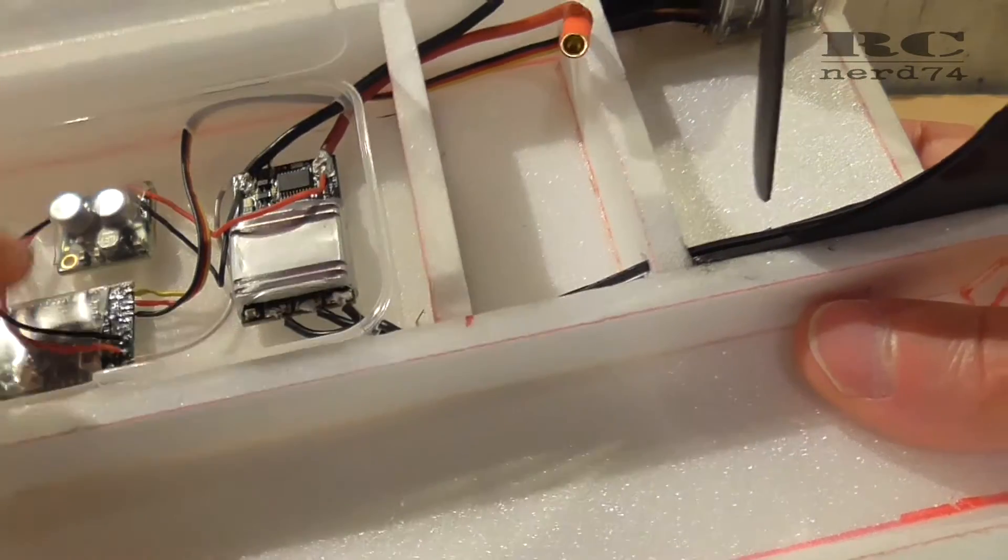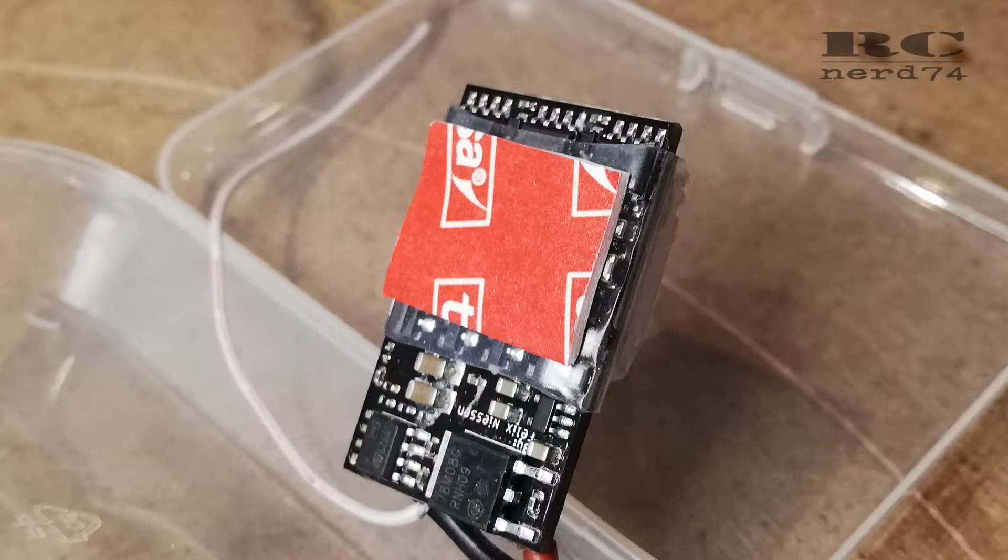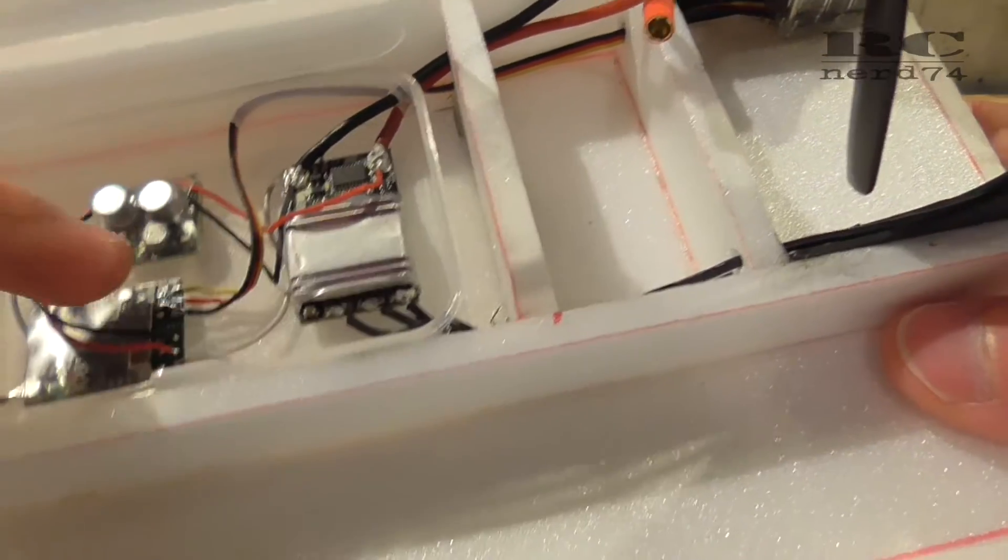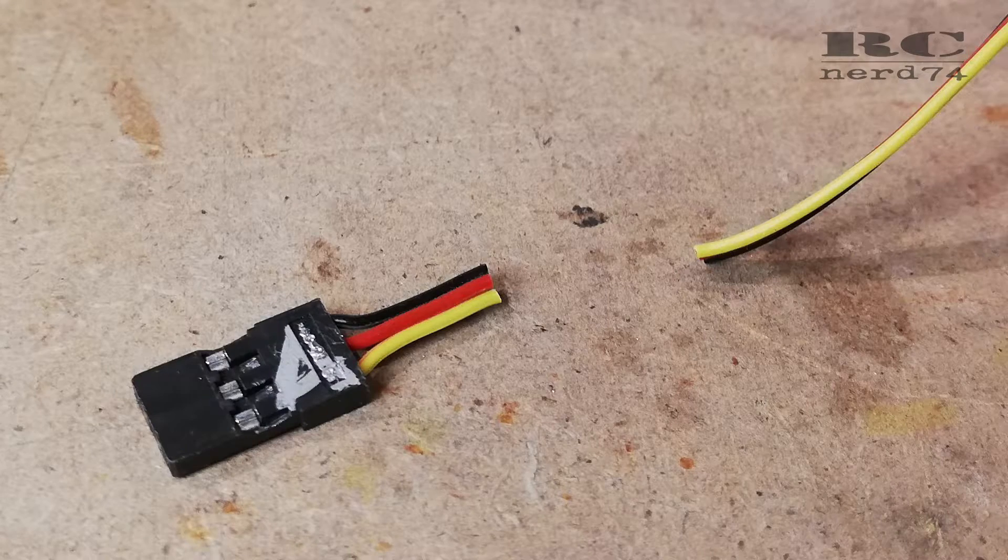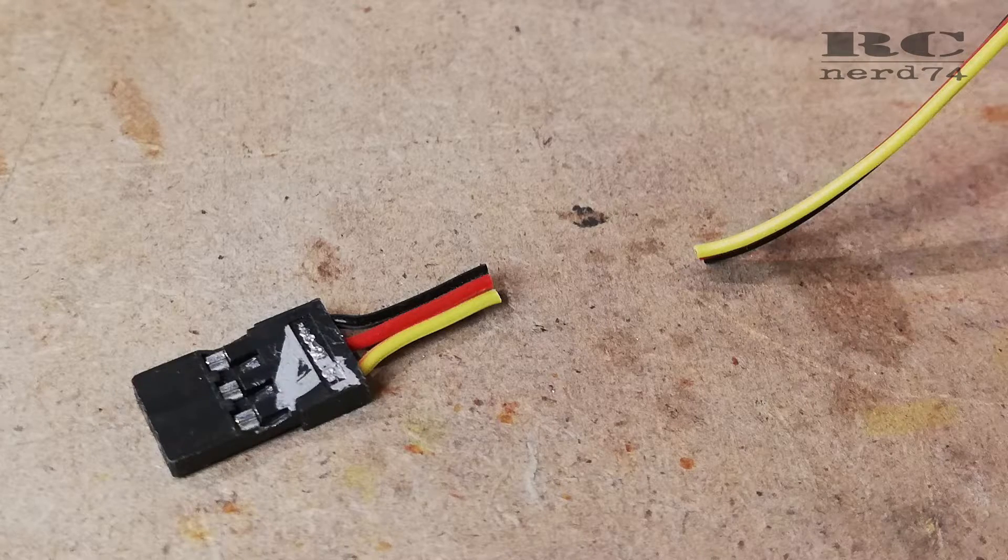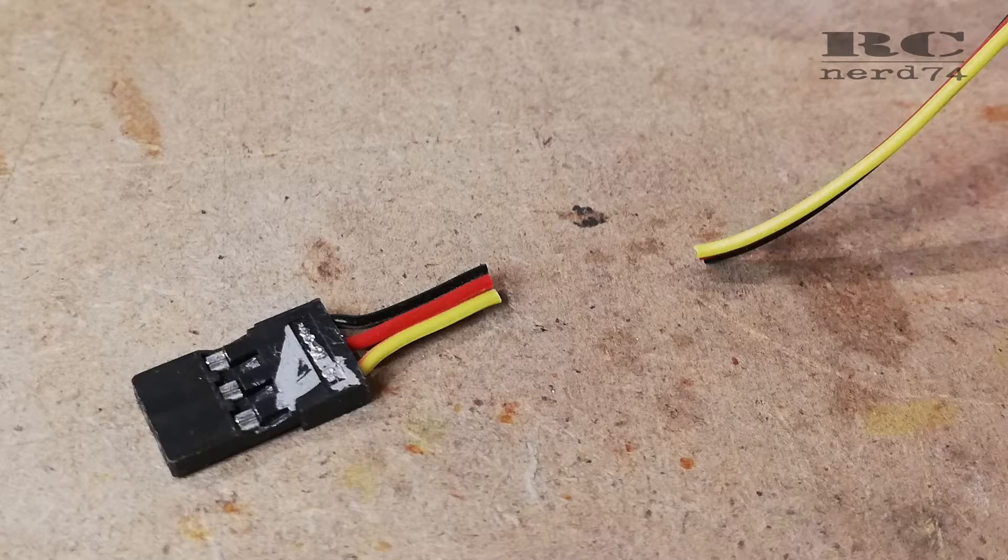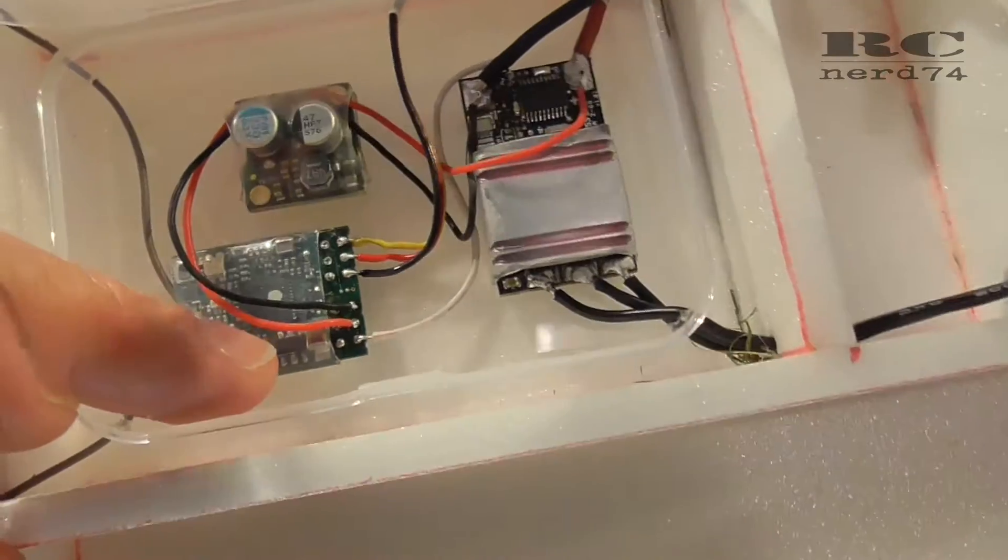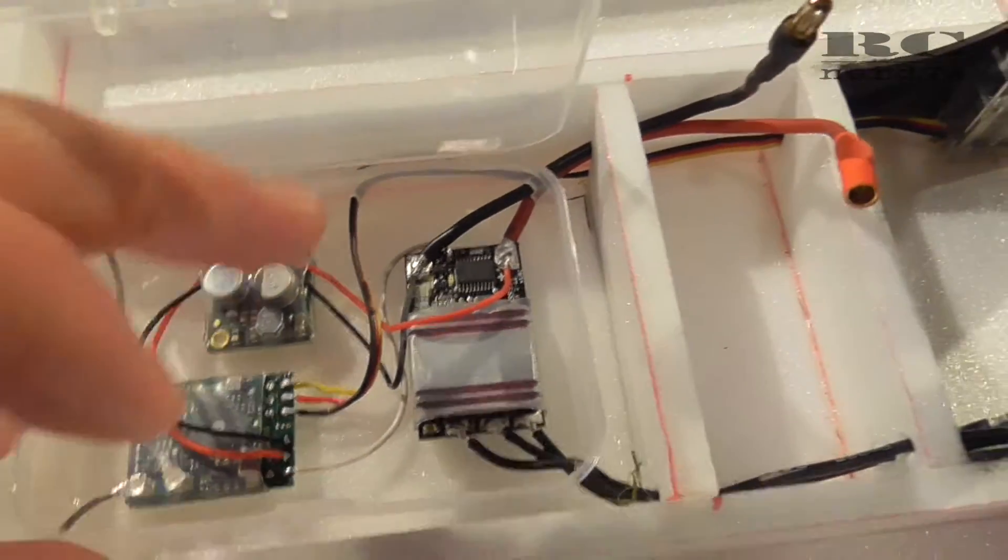Then I used some double-sided tape to fix all the components in the bottom of the box and wired up the whole stuff. To wire up the servo I had to cut off the connector of the servo and just straight soldered the servo cables onto the RC receiver. We have a pretty clean wiring now.